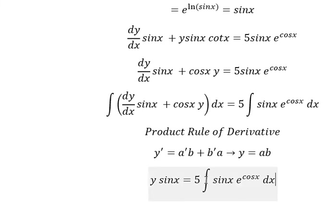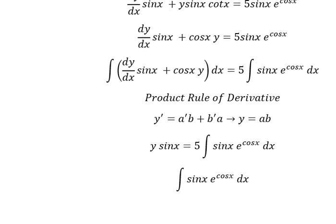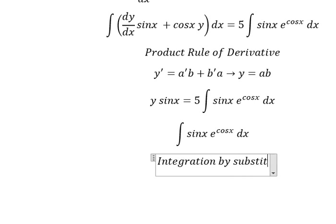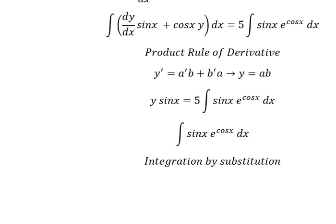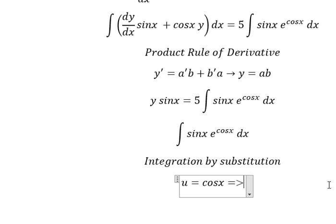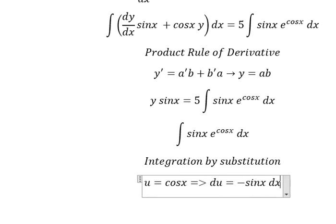Now I will concentrate on this side. The integration of this gives us y equals the integration of this expression. We can use integration by substitution — I will let u equal cosine x. Taking the first derivative of both sides gives us du equals negative sine x dx.